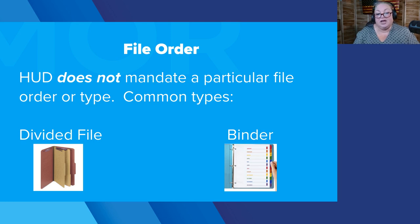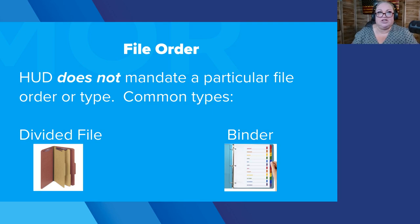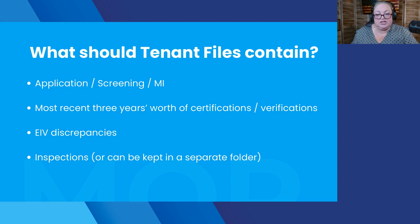There are a couple of common options. We generally either see people using a divided file with a different number of dividers, sectioned off as per owner-agent policy, or some people put their tenant files into a binder, again divided by sections. There is no right way to do this. Some section by year, some by type of document — all leases in one place, all move-in things in one place. It's really up to the owner-agent to set the particular order of a file.